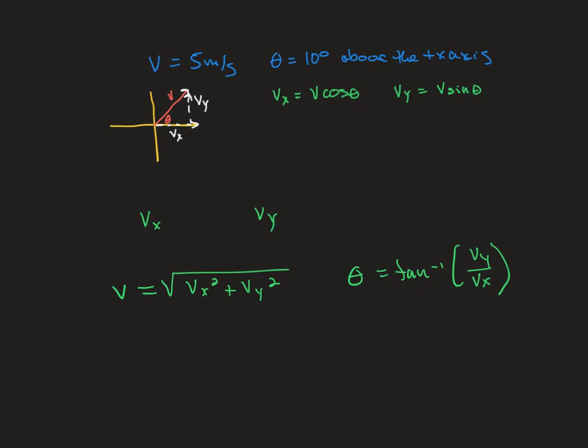Once you get your answer, you'll have an x-component and a y-component. But you want magnitude and direction instead of just components, so you need to use Pythagorean's theorem and inverse tangent to find magnitude and direction.